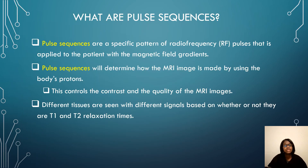So what are pulse sequences? It is a specific pattern of RF pulses that is applied to the patient with the magnetic field gradients. It will determine how the image turns out based on the body's protons. This will control the contrast and the quality of the MRI images. Different tissues are seen within different signals, and this is based on whether they will be T1 or T2 relaxation times.